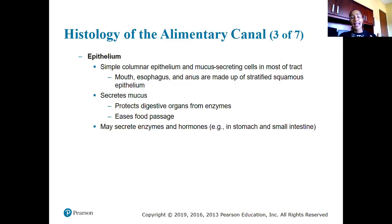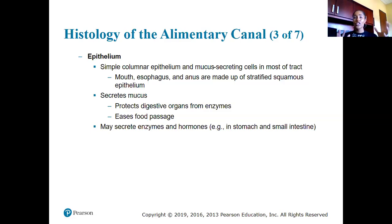The specific type of epithelium lining the mucosa is simple columnar epithelium with mucus-secreting cells in most of the alimentary canal. However, the mouth, esophagus, and anus are made up of stratified squamous epithelia — a thicker type of epithelia — which makes sense because these areas involve actions that could have more friction.